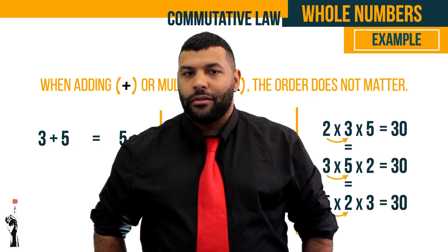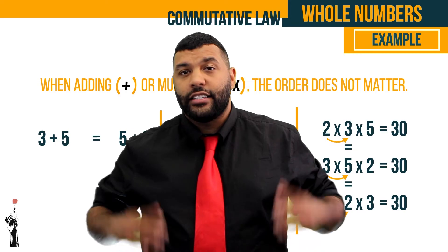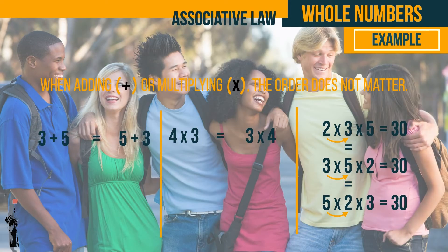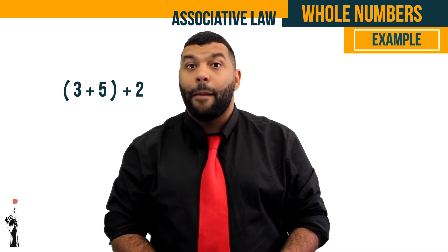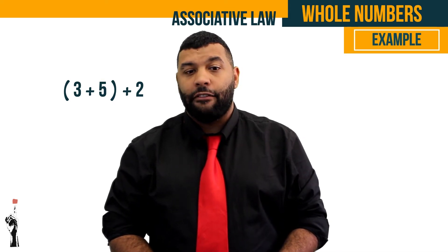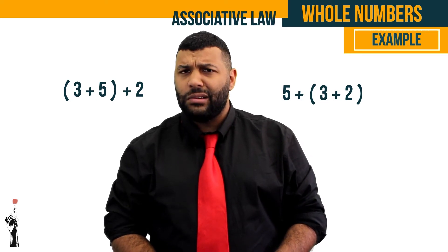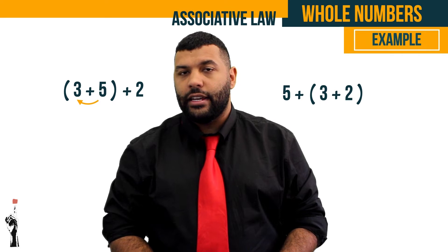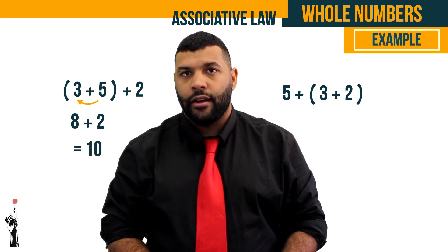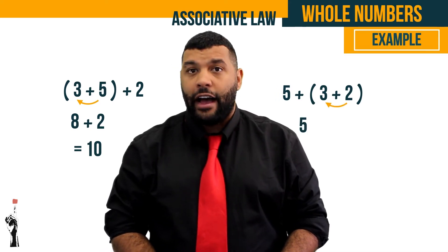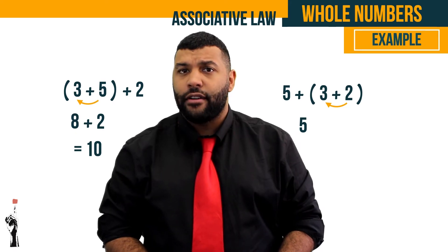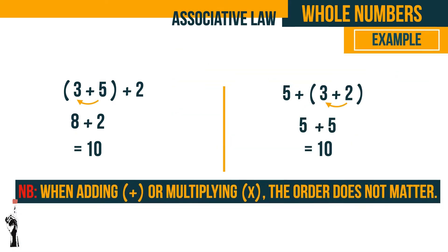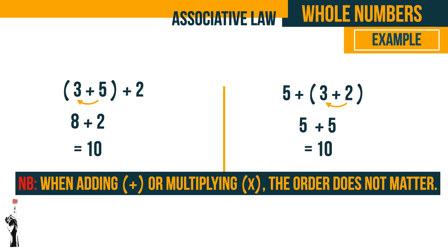When we speak about the associative law, we think of the word association, which means who you hang out with. The same idea can be applied to mathematics. For example, 3 plus 5 plus 2 is the same as 5 plus 3 plus 2. Even though they may sound the same, mathematically they're slightly different — it's about which numbers we group together. This is the associative law: grouping numbers together.